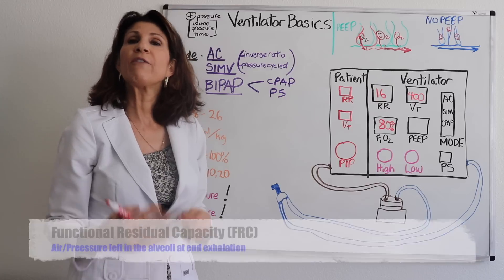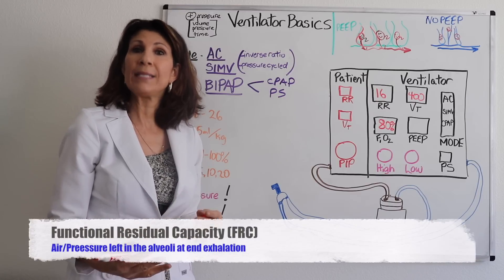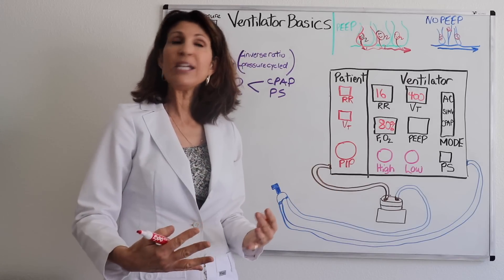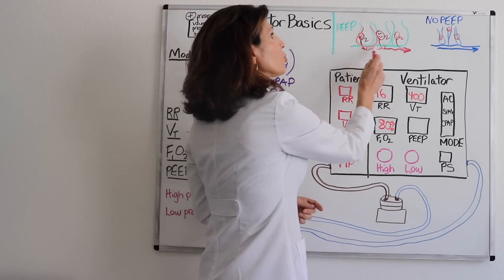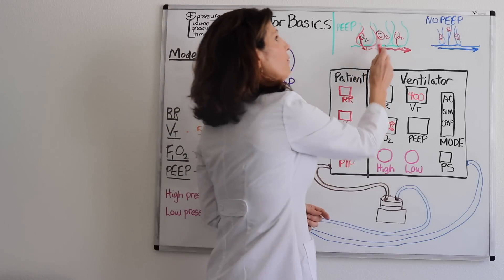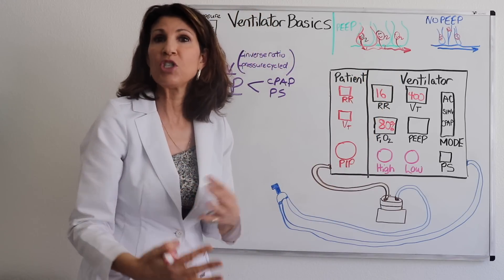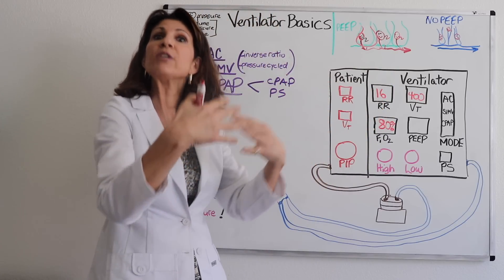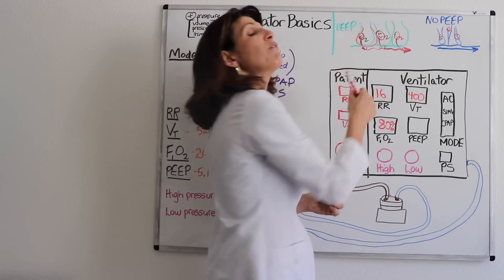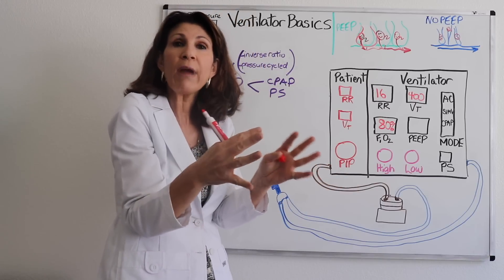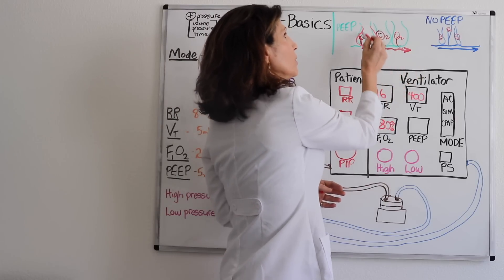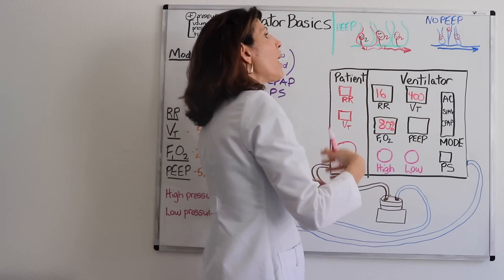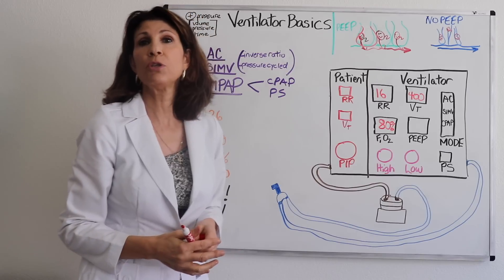And what PEEP does is it keeps the alveoli open at end exhalation. So it increases what's called that functional residual capacity. So increasing the air or pressure really in the alveoli at end exhalation gives you more surface area for gas exchange. It gives the alveoli more time for gas to exchange. It actually helps recruit partially collapsed alveoli so they never collapse. And it prevents other alveoli that are kind of threatening to collapse to be propped open. So you can see all this oxygen is very happy, diffusing across the membrane. And you don't have to increase that FiO2 with your PEEP.